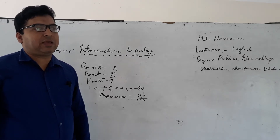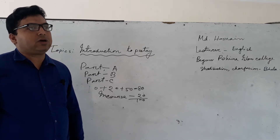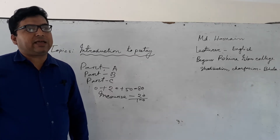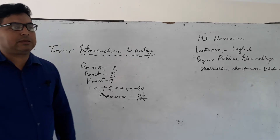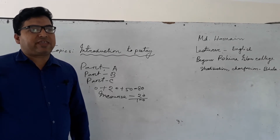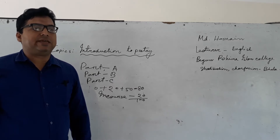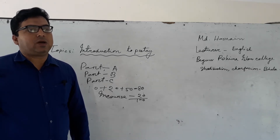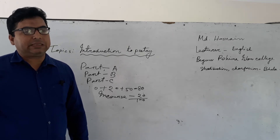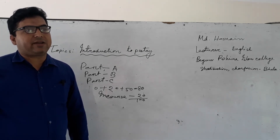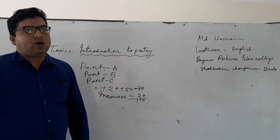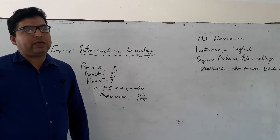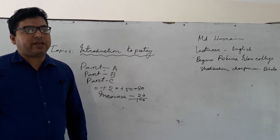In introduction to poetry, there are 20 poems from all English periods to modern. I am telling the poets. First: William Shakespeare, 'Shall I Compare Thee to a Summer's Day.' John Milton, 'On His Blindness.' John Keats. Robert Herrick, 'To Daffodil.' Thomas Gray, 'Elegy Written in a Country Churchyard.' William Wordsworth, 'I Wandered Lonely as a Cloud.' P.B. Shelley, 'Ode to the West Wind.' John Keats, 'To Autumn.'